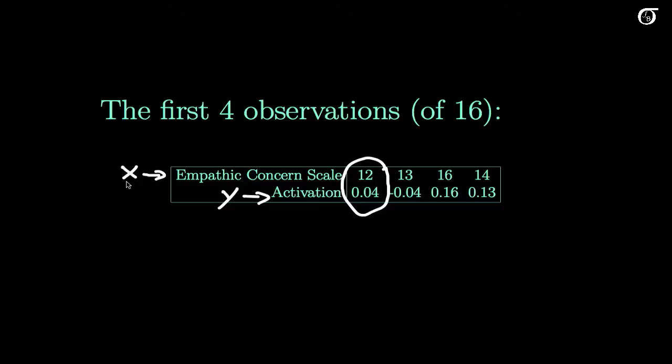And I'm going to call this empathic concern scale my X. So I've got 16 XY pairs, the first one being 12 and 0.04. Here I've only got four of these listed, but I'm just giving the first four rather than making this all messy here.